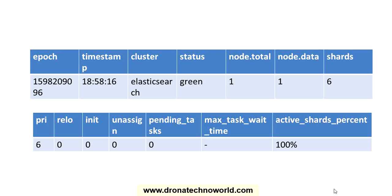Let's understand these response attributes in detail. I've divided the multiple attributes into two tables for clarity. The first attribute is 'epoch', which is the numerical representation of time; then 'timestamp' for when the command was executed; then 'cluster', which is the cluster name we gave at installation — that is 'elasticsearch'; then 'status', which shows green, yellow, or red. Then we have number of nodes, number of data nodes, number of shards, primary shards, relocating, initializing, unassigned, pending tasks, max task wait time, and active shards percentage. The status here is green.